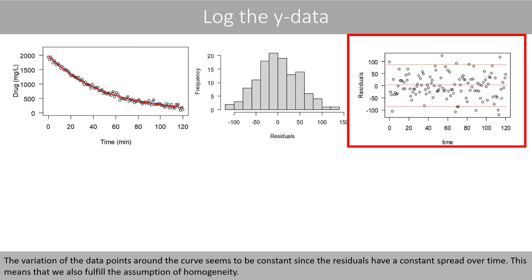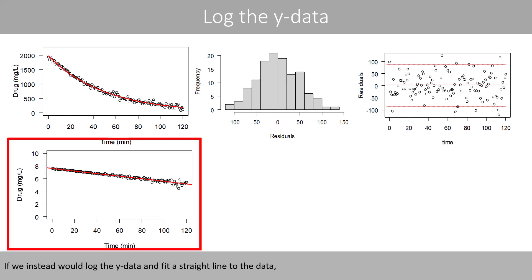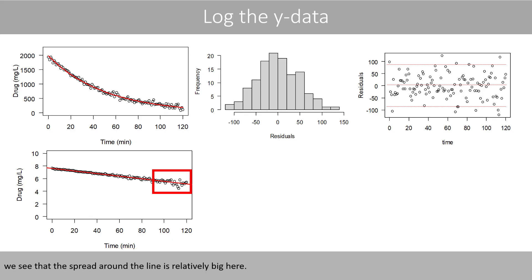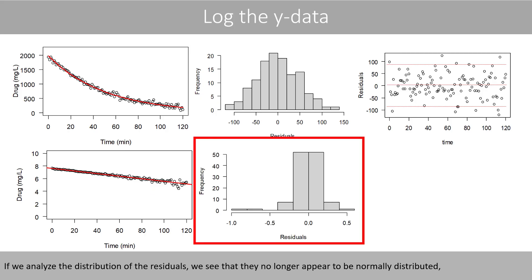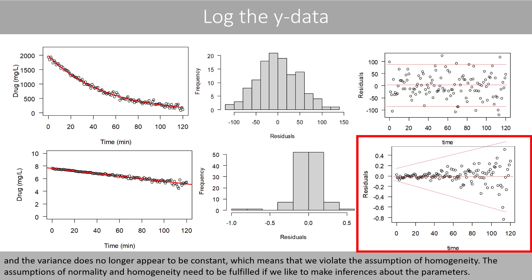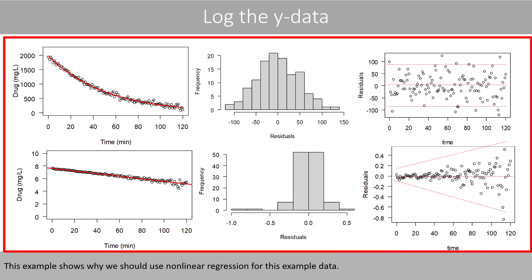The variation of data points around the curve appears constant, so the residuals have a constant spread over time, meaning we also fulfill the assumption of homogeneity. If we instead log the y-data and fit a straight line to the logged data, the spread around the line is relatively large. The residuals no longer appear to be normally distributed, and the variance no longer appears to be constant, violating the assumption of homogeneity. The assumptions of normality and homogeneity must be fulfilled to make inferences about the parameters, which is why we should use nonlinear regression for this example.